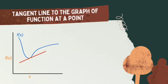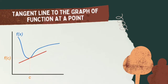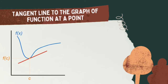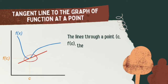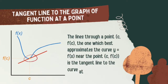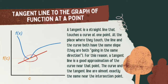The horizontal line is our C, wherein x values can be found, while the vertical line is our F of C, wherein y values can be found, and they intersect at this point, which is called the point of tangency. The line through point C and F of C that best approximates the curve y = F(x) near the point C and F(C) is the tangent line to the curve at that point. A tangent line is a straight line that touches the curve at one point. At the place where they touch, the line and the curve both have the same slope, or they are both going in the same direction. For this reason, a tangent line is a good approximation of the curve near that point. The curve and the tangent line are almost exactly the same near the intersection point.